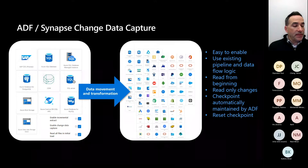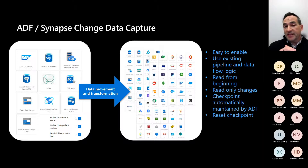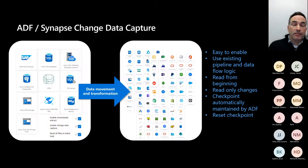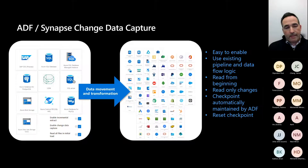That gives you the flyover of Data Factory. Now, what we're going to talk about is using the Change Data Capture capability. Change Data Capture is the ability to take data from your sources and not have to reprocess the entire dataset every time - only bringing in the rows that have changed, been updated, deleted, or inserted, and then processing those through your data flow. It's very valuable especially when working with big data, because you don't want to do a full load every time.